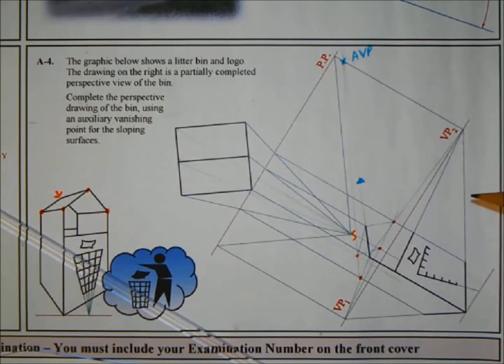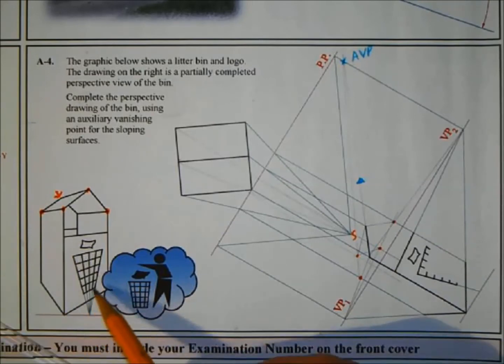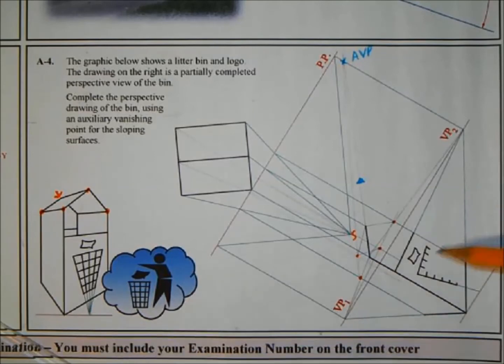Now the design in the front is given to you over here at the logo. They're all vanishing down to that vanishing point down here so we can just basically join them all in and these will vanish to vanishing point VP2. Let's put that in.